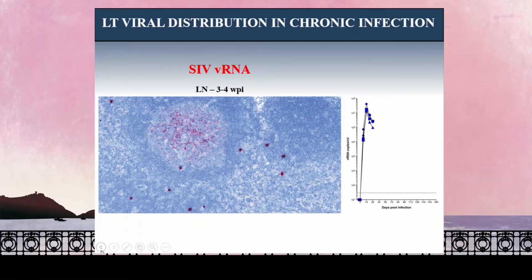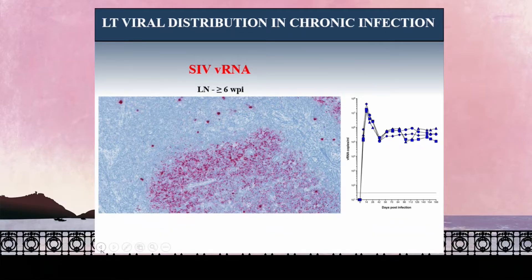Just a few days later, the virus has expanded dramatically. We are now at peak viral infection, and the number of productively infected cells is just immense within the lymph node. Just a week later, the pattern of virus and replication has changed, likely due to the host beginning to mount effective immune responses controlling the virus, as well as loss of key target cells within the tissues. The number of productively infected cells is less in the pericortical T cell zone, and we begin to see deposition of virus within the follicular dendritic cell network and the B cell follicle.